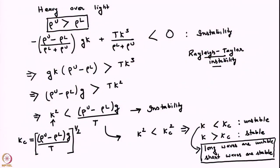We were looking at one of the limits of the dispersion relation when there was no velocity in the upper as well as the lower fluid. In particular, we were looking at a heavy over light configuration where the density of the upper fluid was greater than the lower fluid. And we had found, expectedly, that there could be instability.